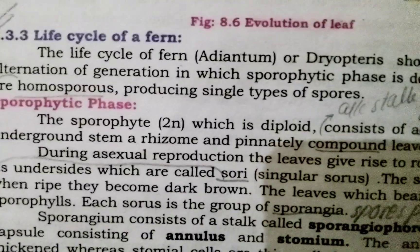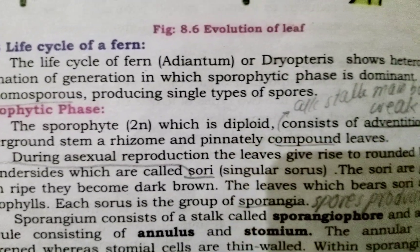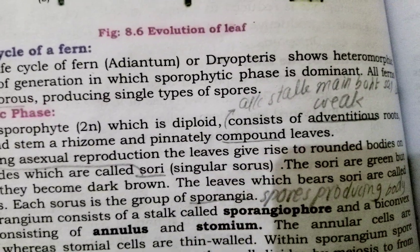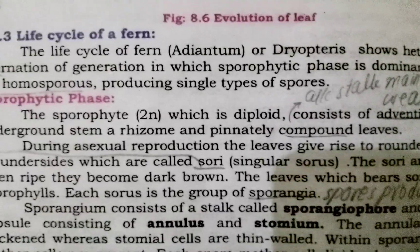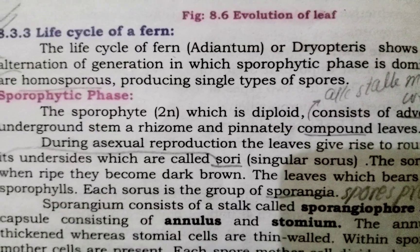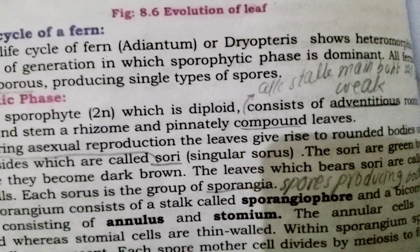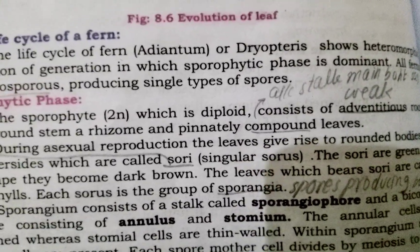Sporophyte phase: The sporophyte, which is diploid, consists of adventitious roots, an underground stem or rhizome, and pinnately compound leaves.